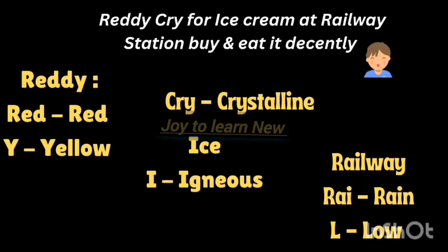Take the word 'ready' — R-E-D represents red soil, and Y represents yellow soil. So 'ready' stands for red and yellow soil. Then 'cry' — C represents crystalline and I represents igneous rock. That means red and yellow soil develops on crystalline and igneous rock.